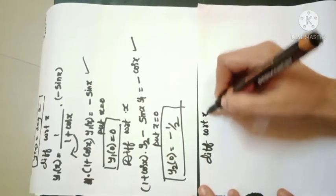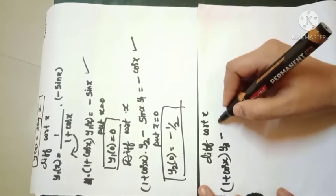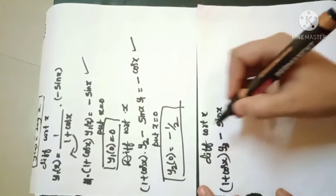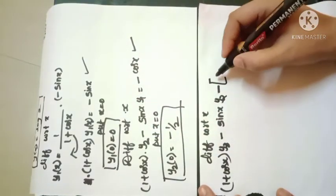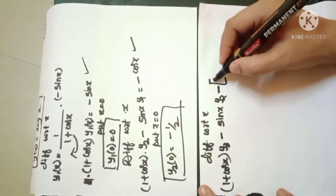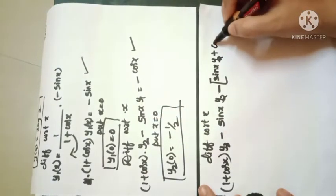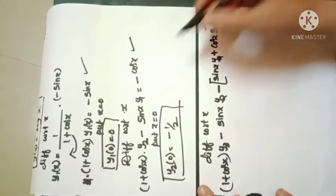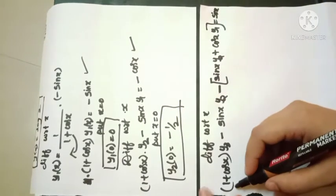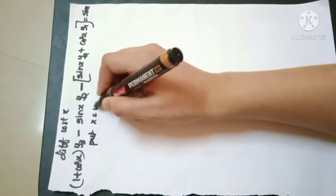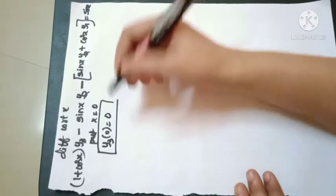Differentiating again with respect to x to get y3: (1 + cos x)·y3 − sin x·y2 − [sin x·y2 + cos x·y1] = sin x (since differentiation of −cos x is sin x). Putting x = 0 and simplifying, we get y3(0) = 0.